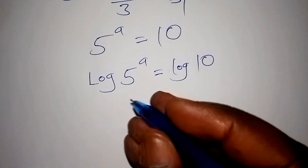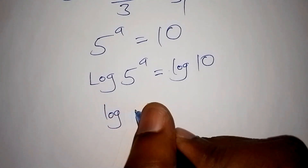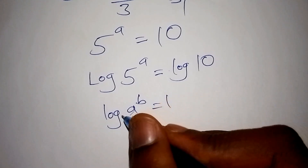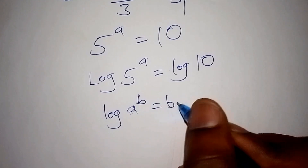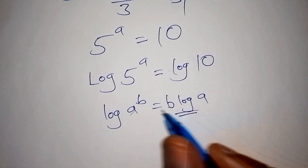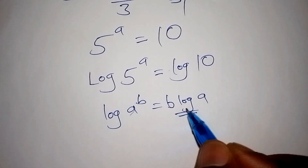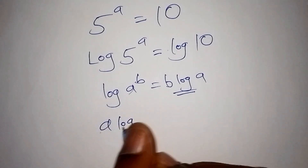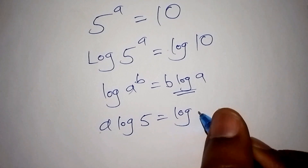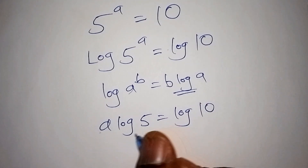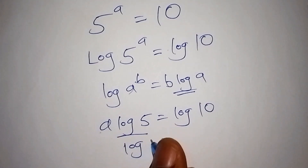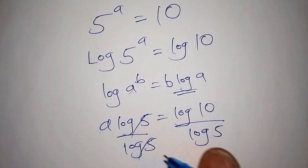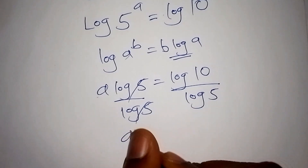Since we have the log of 5 to the power of a, we can express it using the log power rule: log of a to the power of b can be written as b times log a. So we express the log of 5 to the power of a as a times log 5. This gives us a log 5 equals log 10. We then divide both sides by log 5, so log 5 cancels.